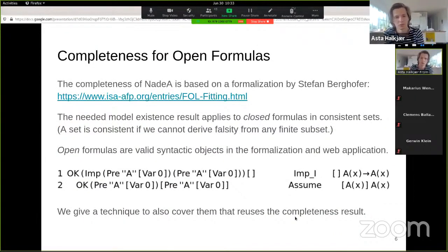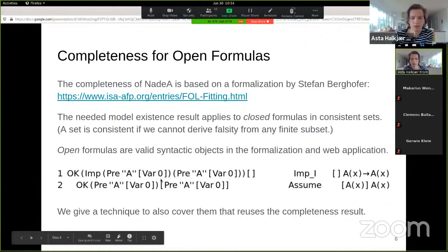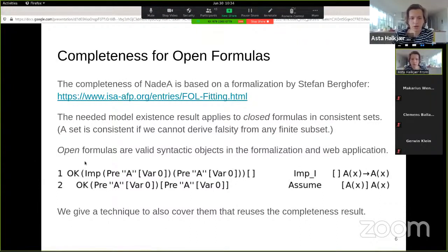So the completeness, so this system is proved sound and complete, the completeness is based on the formalization by Stefan Berghofer of Fitting's work. And there, the model existing results, it applies only to closed formulas. But then I asked, so I did this work for my bachelor thesis, and I thought, what about open formulas? They are valid syntactic objects in both the formalization and the web application, so can we be sure that a proof exists for an open formula? So here's an example, if you put in zero as a De Bruijn index, you don't have any quantifier, then you get an open formula. This is how it would look in the web application also. And so I want to spend the second part of the talk just talking about a way to reuse this completeness result for closed formulas to also cover open formulas.